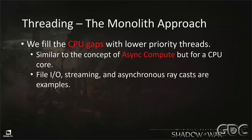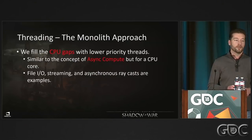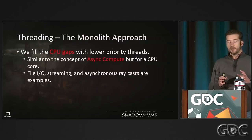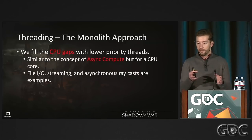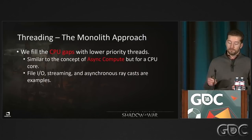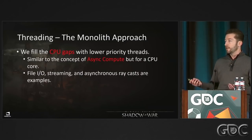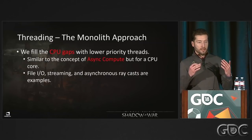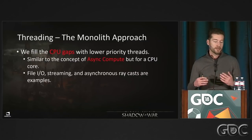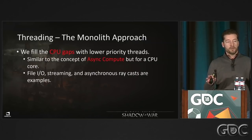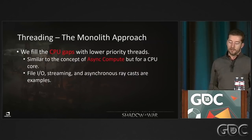The first problem we saw was CPU gaps. We handle those gaps using the same technique the GPU uses with asynchronous compute. We have these large systems affinitized to cores, and then we have low-priority threads that can jump in any time those large systems slow down or go to sleep. These include file I/O, streaming, audio streaming, and asynchronous ray casts — where at the beginning of the frame the game requests, say, 500 ray casts that it doesn't need until 25ms into the frame.